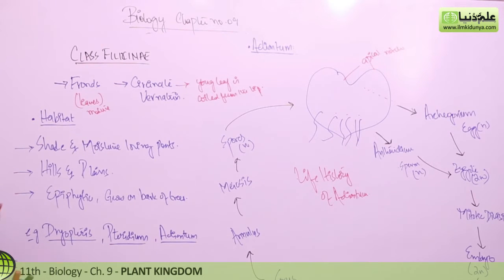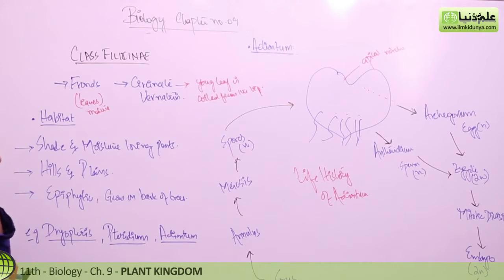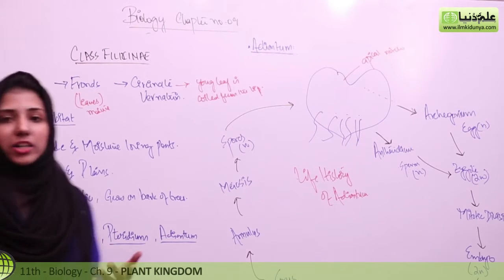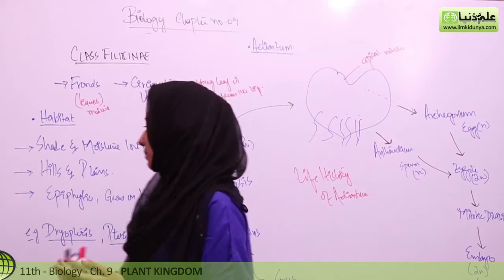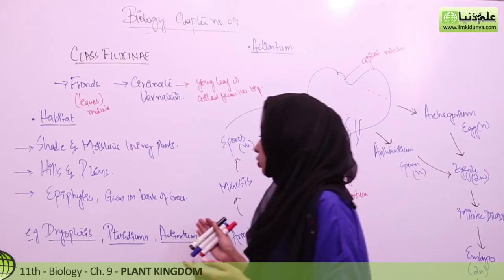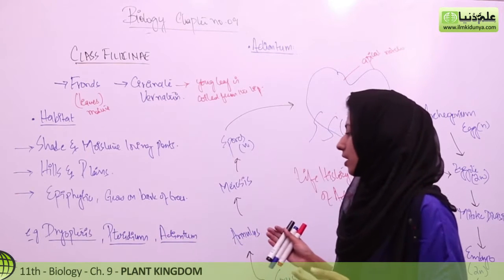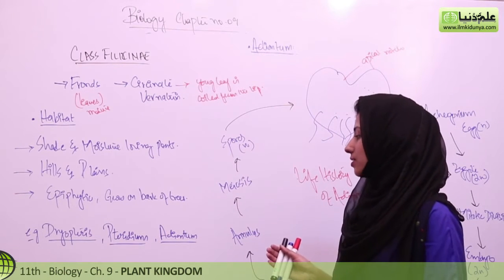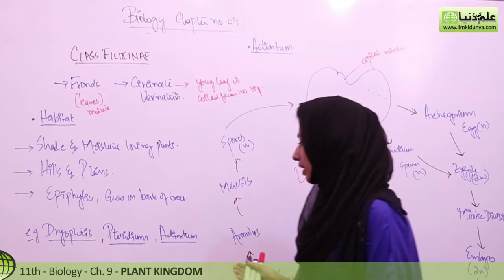In Pteropsida, the habitat consists of shade and moisture-loving plants. They grow in hills and plains. They are epiphytic, meaning they grow on other plants — specifically on bark and trees. Examples include Dactilis, Pteridium, and Adiantum.